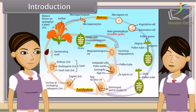And the process which involves fusion of male and female gametes to form a new individual is known as sexual reproduction.